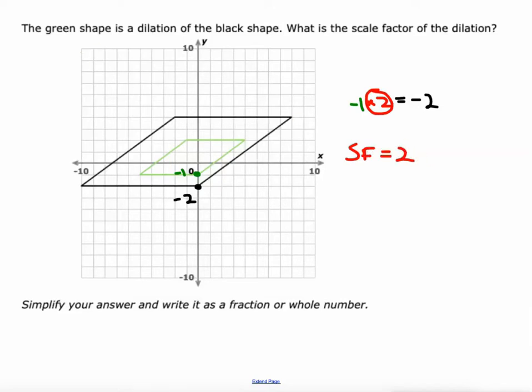Other places you can kind of see this relationship, here's a side length of four. And then when you look at this side length right here, it's eight, four times two is eight. Or you can look at this point right here, which is two above the origin. And this point right here, which is four above the origin, two times two is four. So our scale factor is two.